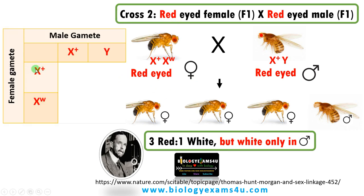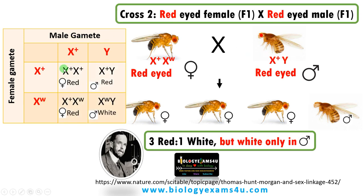Working out the Punnett square: female gametes are X⁺ and X^W; male gametes are X⁺ and Y. Offspring are X⁺X⁺, X⁺Y, X⁺X^W, and X^W Y. He got a 3:1 ratio where 3 flies are red and 1 is white. But he had an important observation — only male flies had the white-colored eye. This was a deviation from the normal Mendelian pattern.